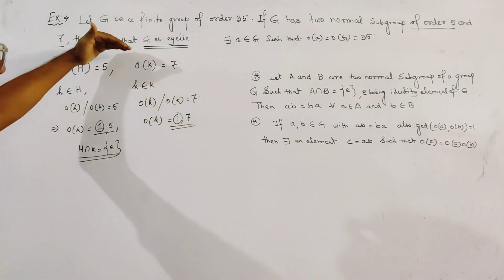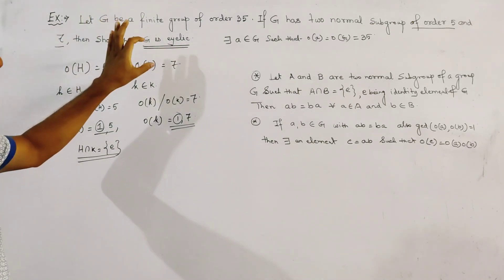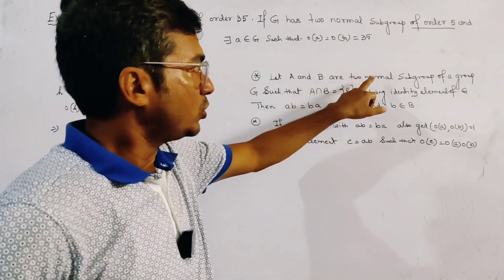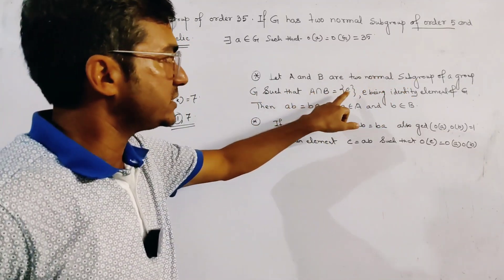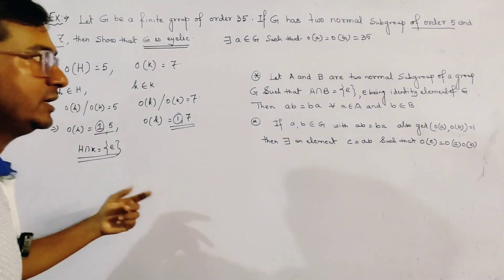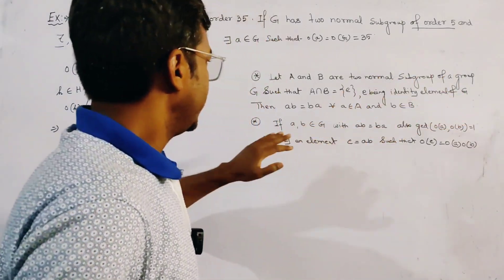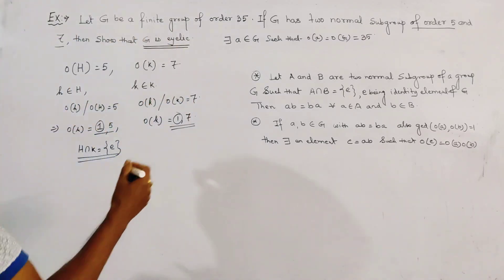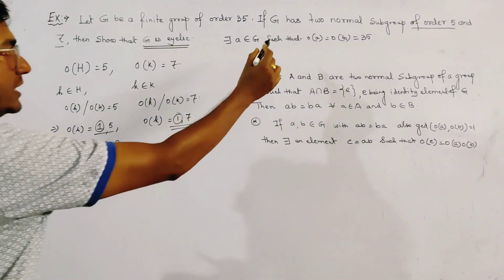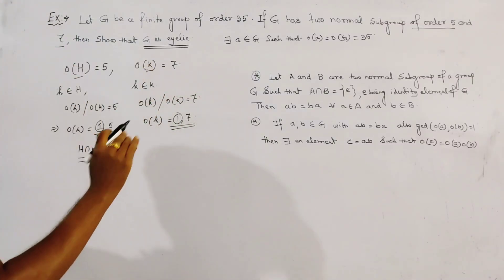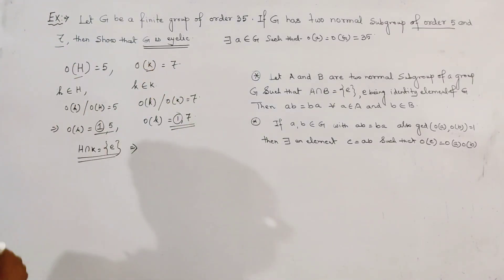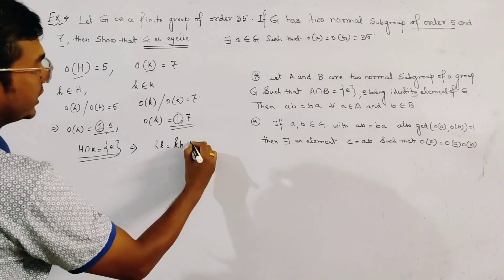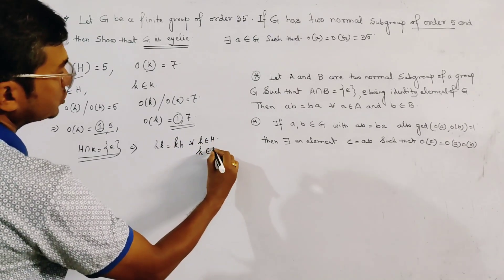To solve this problem we use two important results of group theory. The first result is: let A and B be two normal subgroups of a group G such that A intersection B equals {e}, e being the identity element of G. Then AB equals BA for all a in A and all b in B. We already proved this result previously. Since H and K are two normal subgroups with only common element being the identity, we have hk equals kh for all h in H and all k in K.